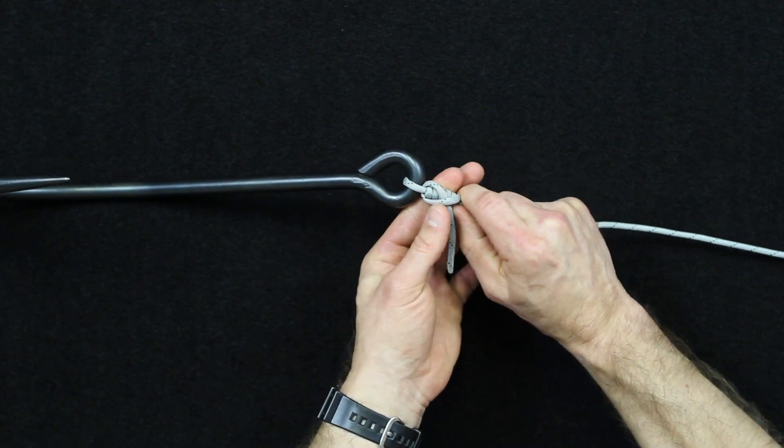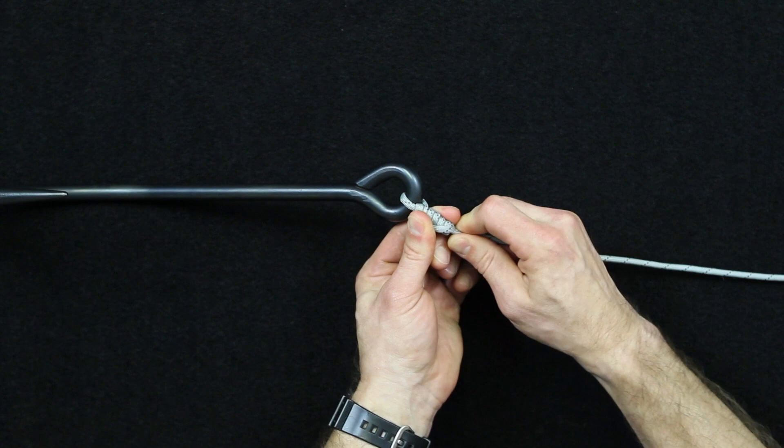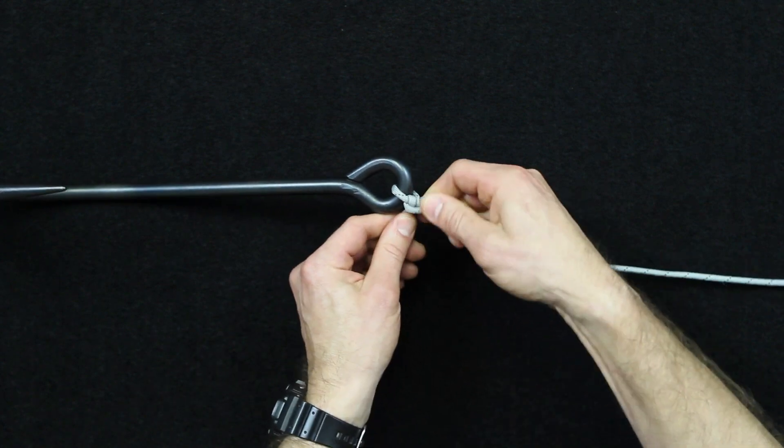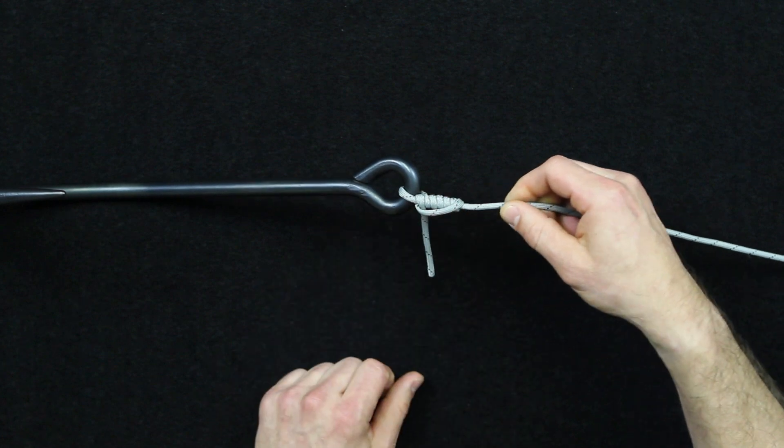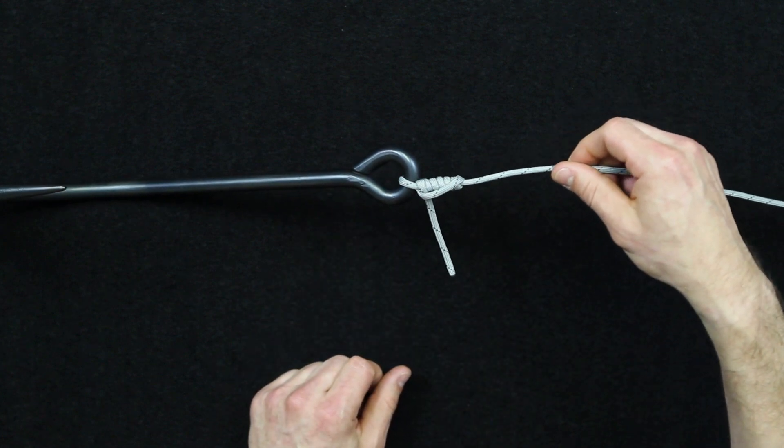And again with monofilament line this will be easier to wrap with. But you want to end up with something that looks like that. And that is a modified clinch knot.